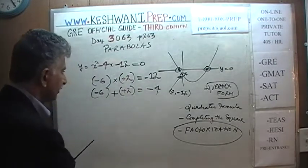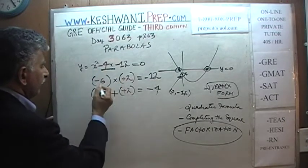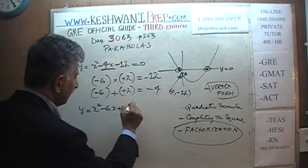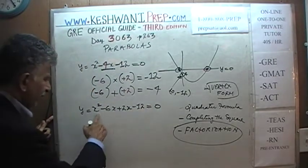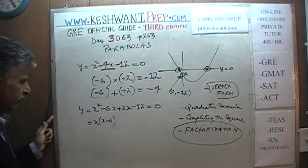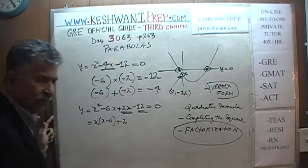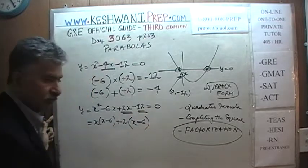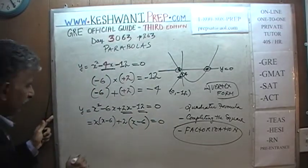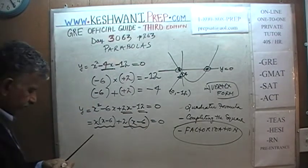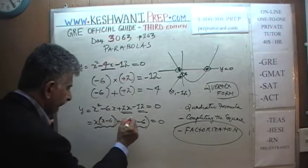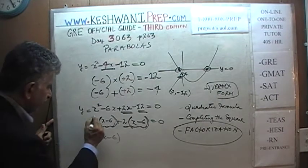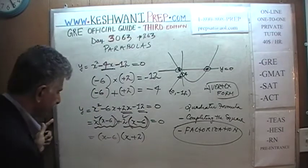We break -4x into -6x + 2x, giving y = x² - 6x + 2x - 12 = 0. Taking x out of the first two terms gives x(x - 6), and taking +2 out of the last two terms gives 2(x - 6). So we have x(x - 6) + 2(x - 6) = 0.